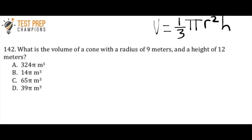What is the volume of a cone with a radius of 9 meters and a height of 12 meters? And again, I've provided you with a formula here. This is volume equals 1 third pi r squared h. And I've done this just for the sake of time here, but just know that on the test, you'll obviously have to look this up on the formula sheet.